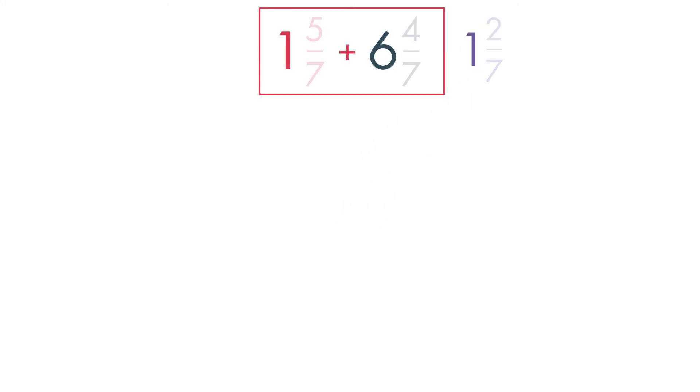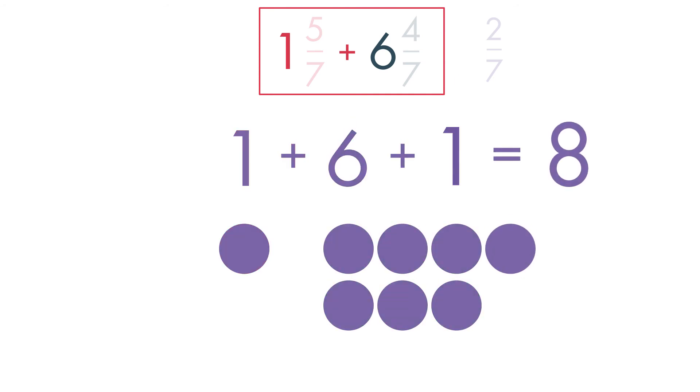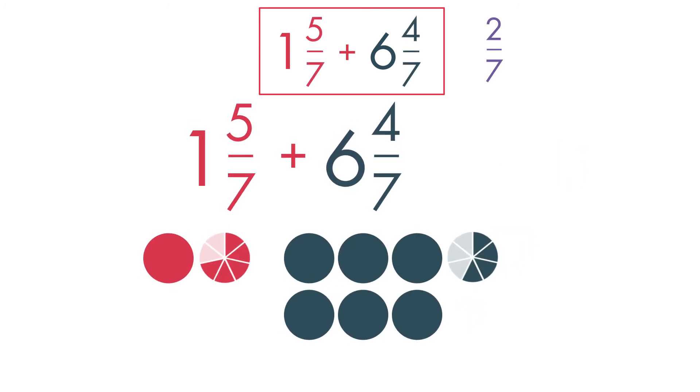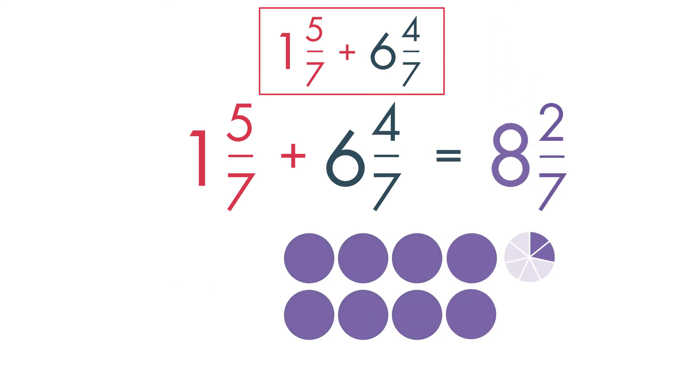Now add the whole numbers. One plus six plus one equals eight. So, one and five-sevenths plus six and four-sevenths equals eight and two-sevenths.